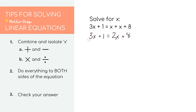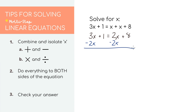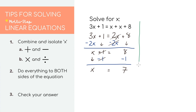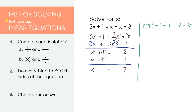It's looking a little more simplified. Let's return to our goal of getting all of our x's on one side and all of our numbers on the other. I want to get all of the x's on the left, so let's subtract 2x from both sides. We get x plus 1 equals 8. Subtracting 1 from both sides, we get that x equals 7. Checking our answer by plugging in 7: 3 times 7 plus 1 equals 7 plus 7 plus 8. When we simplify, we get 22 equals 22, so we know we have the right answer.